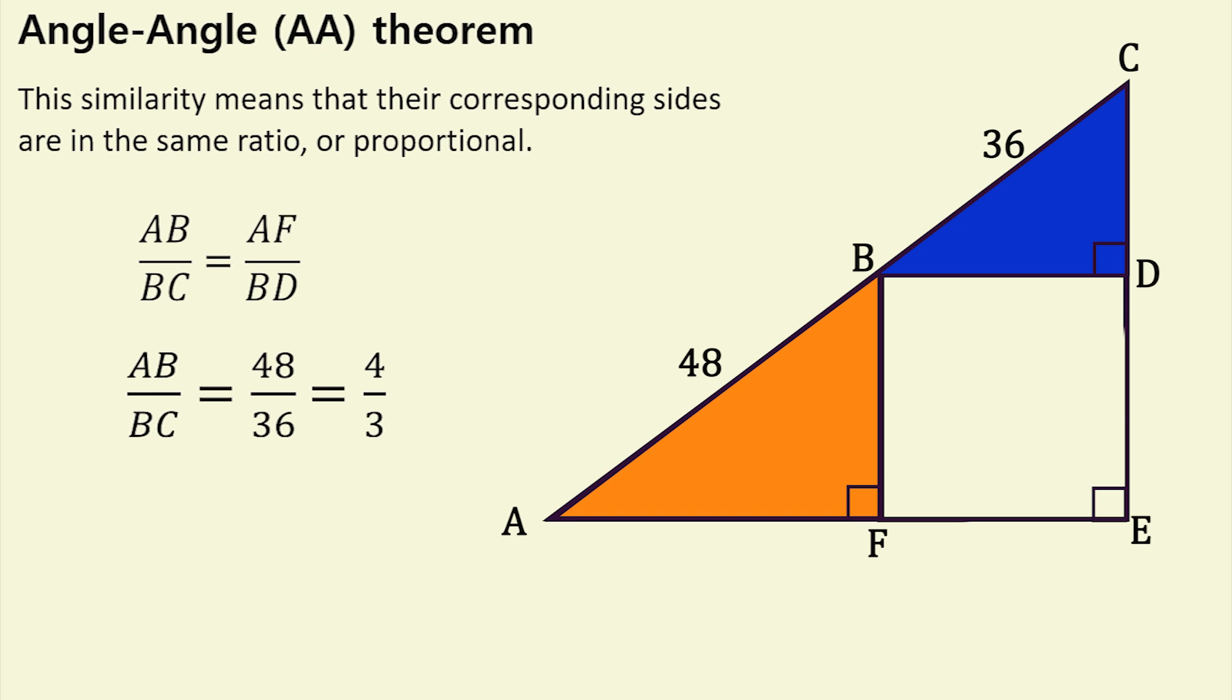Now, let's represent the side length of the square with the variable X. This means that BD, a side of the square, is equal to X. From our proportion, we have 4 thirds equals AF over X. This gives us AF equals 4 thirds X.